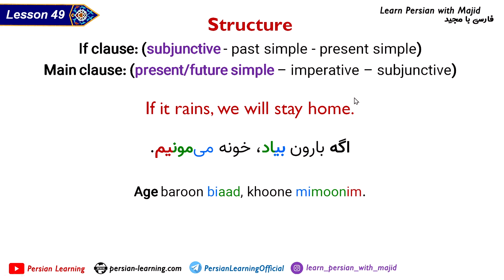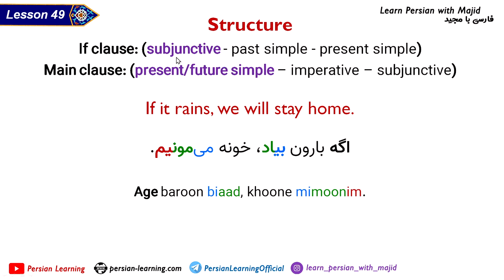As you know, a conditional sentence has two parts, two sentences. One is the condition, which has the word 'if' in English, and in Persian it is 'agge' or standard 'agar'. This is spoken 'agge'. And the other part is the result or consequence, which is called the main clause. As you see here, Persian conditional sentences are really flexible — you can use many types of structures. But this is the most popular, most common structure: in the if-clause, you have the subjunctive.